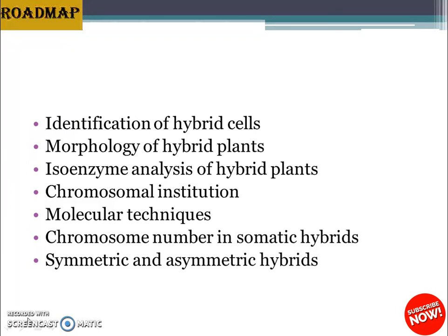Dehydrogenase examples such as alcohol, lactate, and malate dehydrogenases are also used. If the isoenzyme is dimeric — meaning it has two subunits — the somatic hybrid contains isoenzymes with an intermediate mobility property. It is important to use the same enzyme for each plant, including parents and somatic hybrids, from specific tissue of the same age.